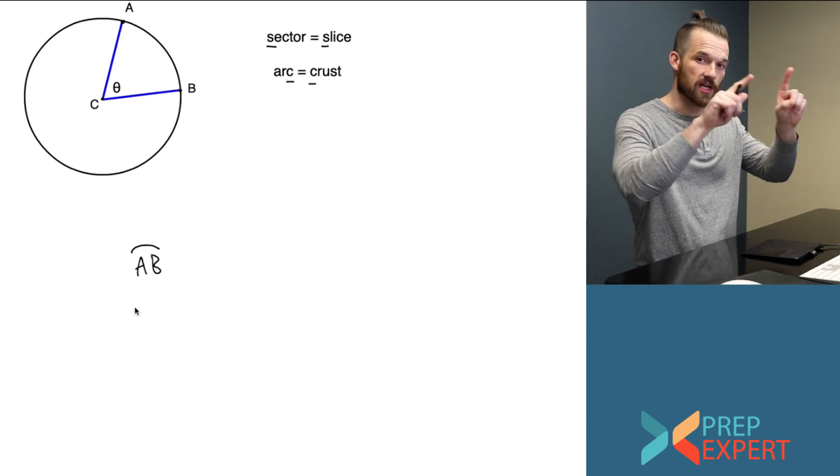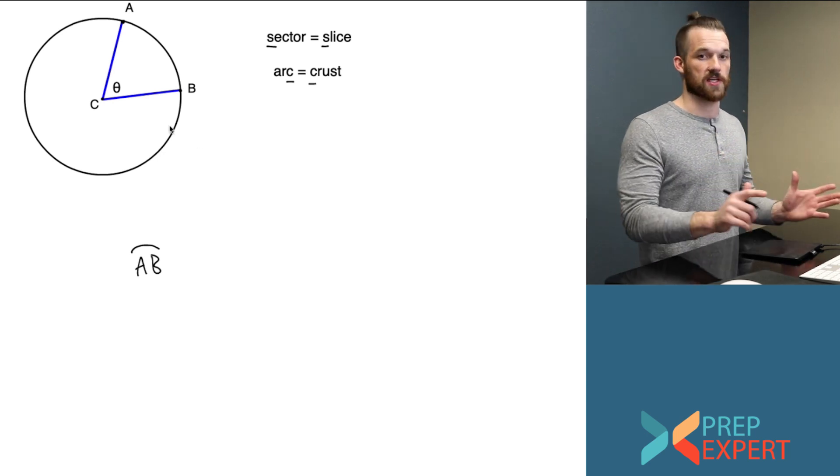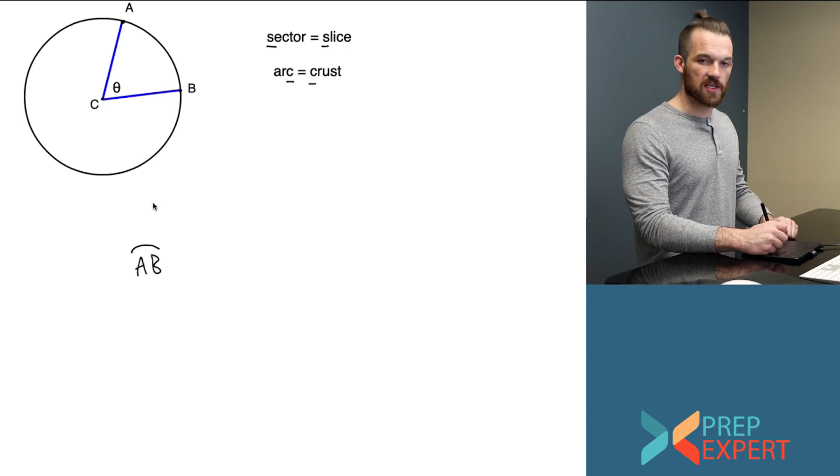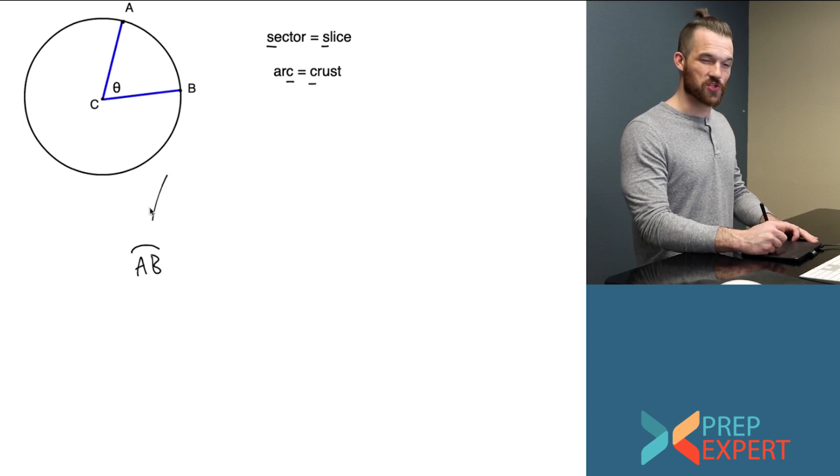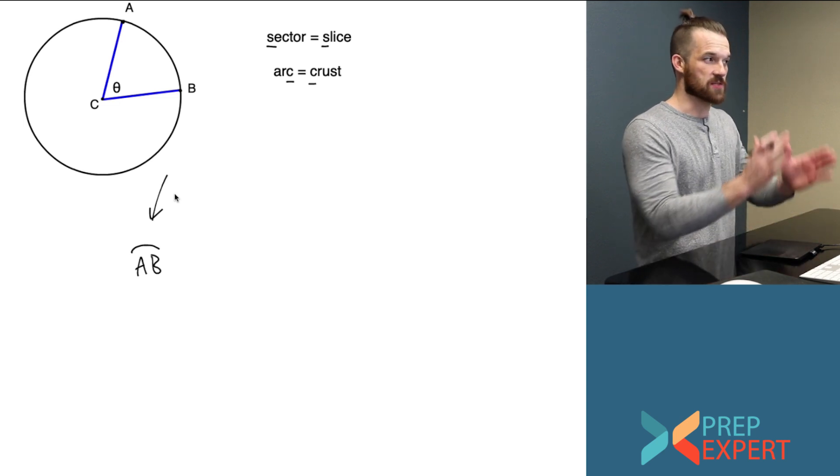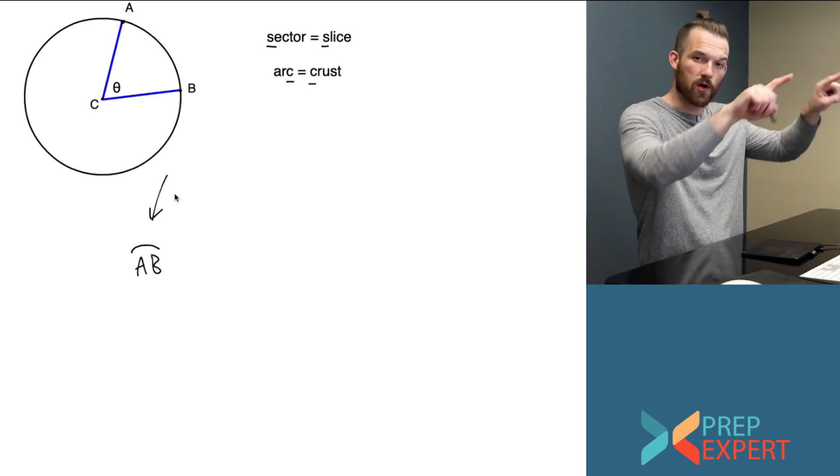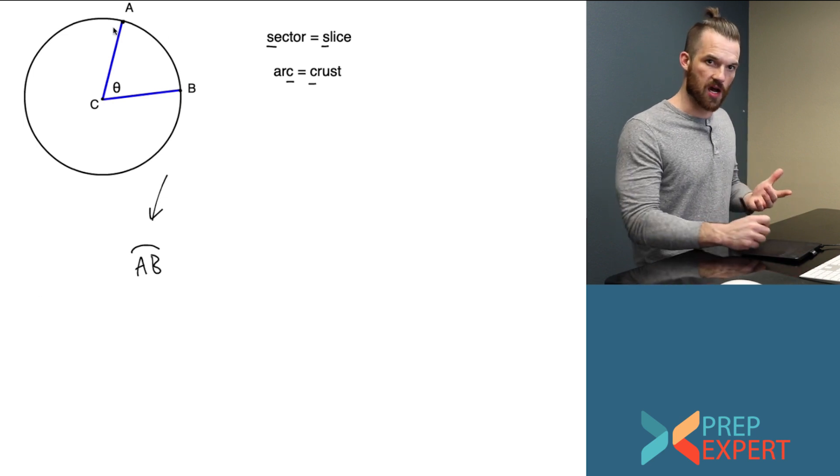When I'm asking myself, what characteristic of the circle corresponds to the arc length of the sector? I ask myself, if I expand that sector until it incorporates the whole circle, what would arc length AB become?